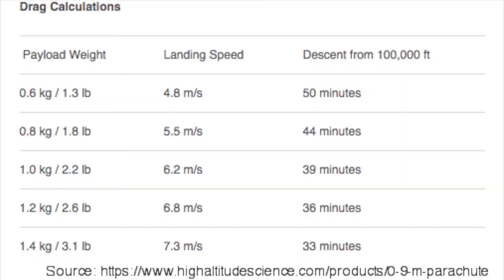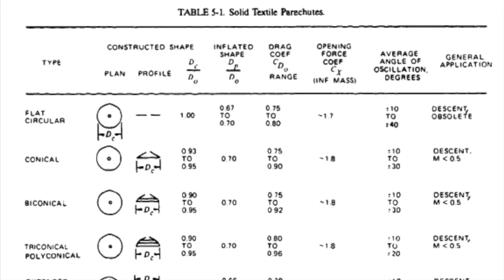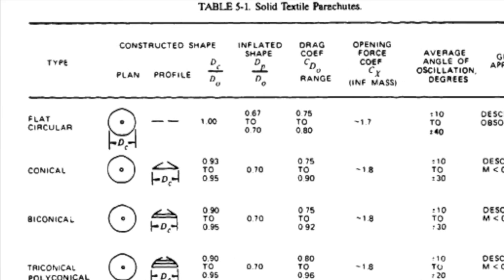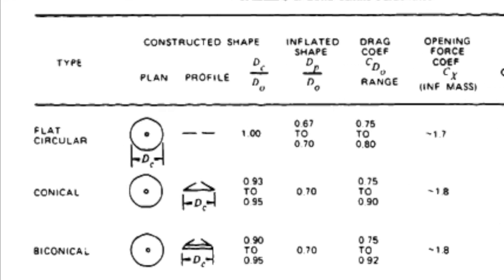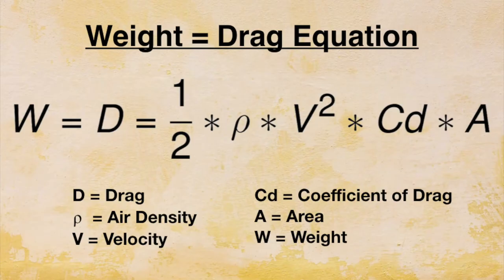Now that we know how parachutes work, let's talk about choosing a parachute. Parachutes are sold by many companies and are specified by their diameter. When selecting a parachute, the manufacturer's website will list specific descent information for that particular parachute — several I've seen show descent rate for different payload weights. I want to show you how to calculate the necessary parachute diameter yourself. It will help you get started in choosing a parachute, and it's based on the science we already discussed. The coefficient of drag of a parachute is based on its shape. For commonly used flat circular or flat hexagonal parachutes, the coefficient of drag is approximately 0.78.